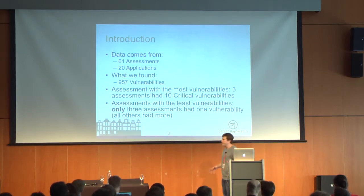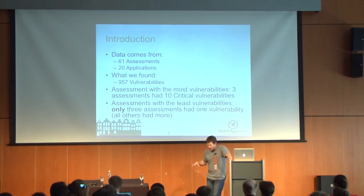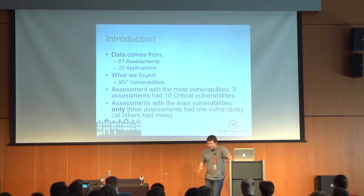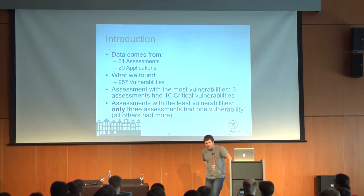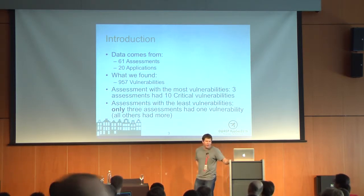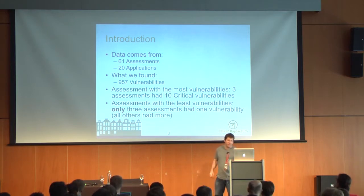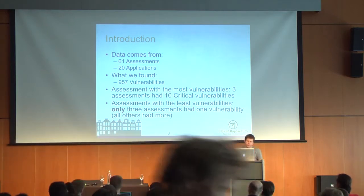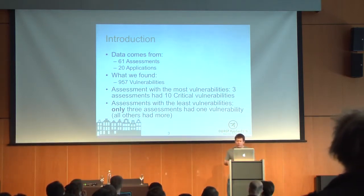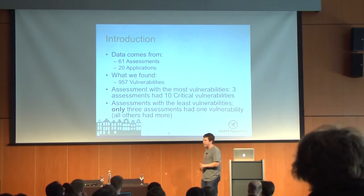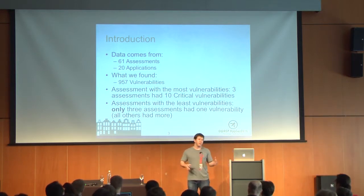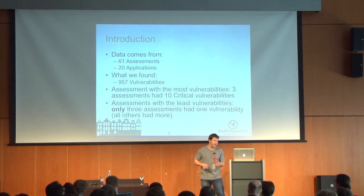This data set comes from 61 assessments spanning across 20 applications. We actually have some newer data that I really wanted to include, but I had a little bit of an IT incident that I'll be cleaning up — the data still exists, I just need to restore it from a backup, and we will have new stats. But this basically looks at a set of 957 vulnerabilities — just under a thousand — identified across these various assessments.